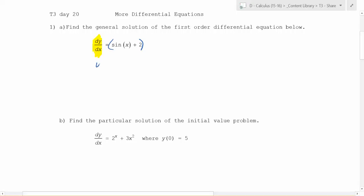So what is y going to be? Negative cosine x plus c. Oh, sorry. Plus 2x plus c. Yes.